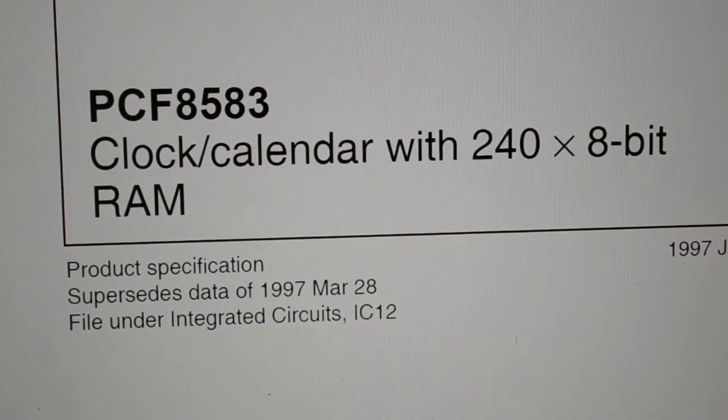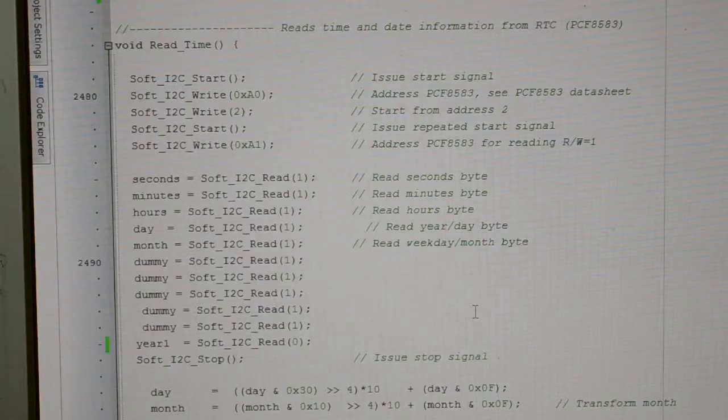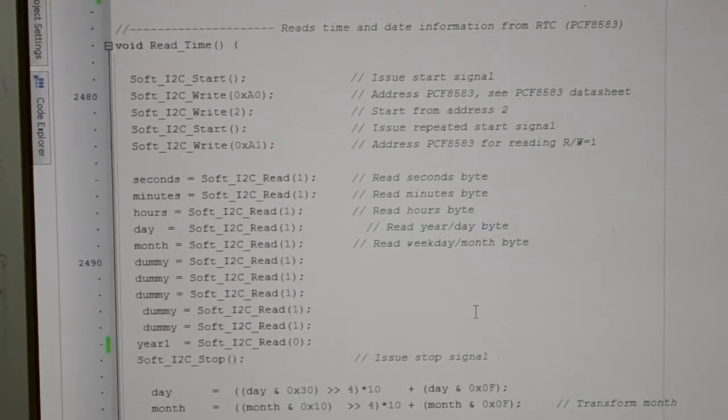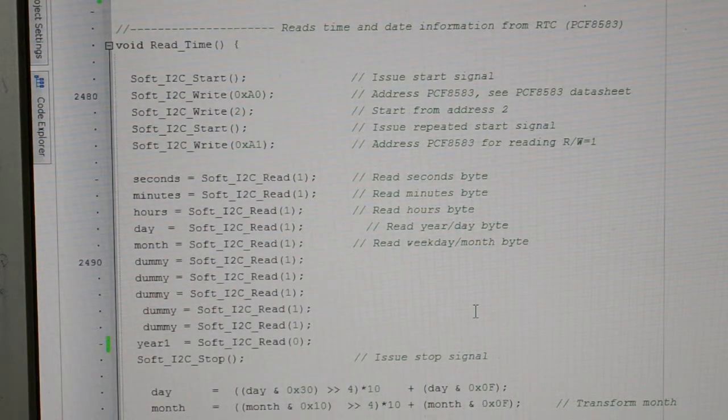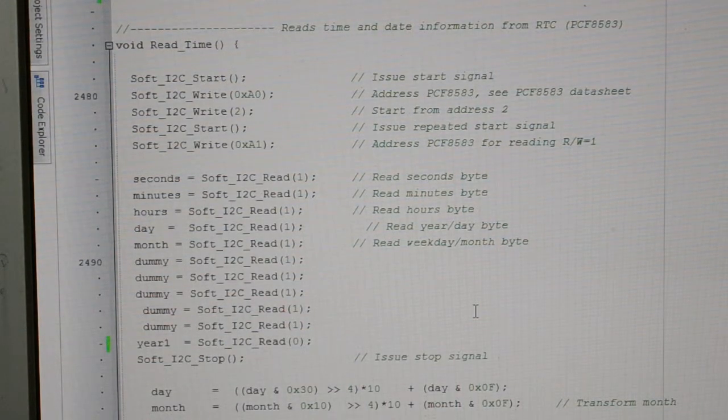Right, here we go. So just to reiterate, that's the clock calendar we're using, made by Philips. You've got it on the screen. Right, so we're using an I2C bus. In this particular software, this is Microelectronica's Micro-C Pro for PIC32.